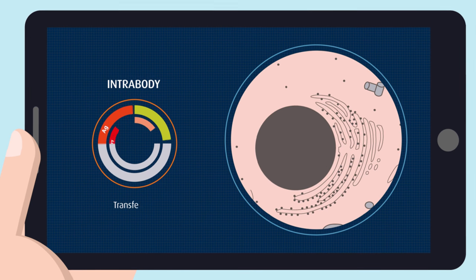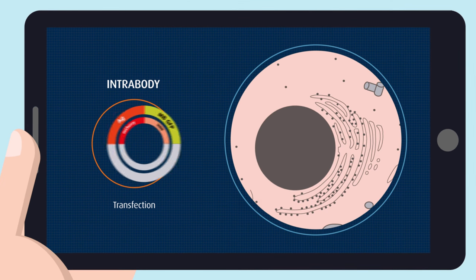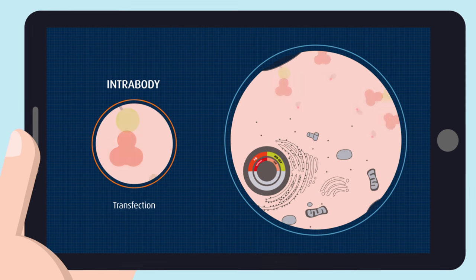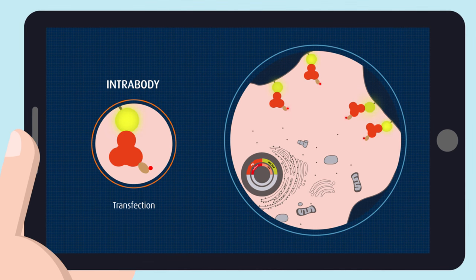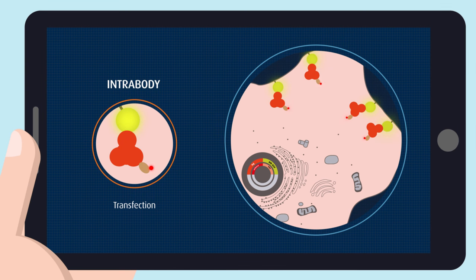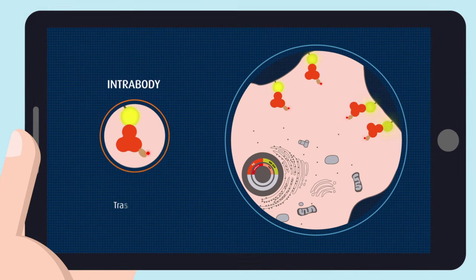We can also test if your VHH work as intracellular antibodies. This time, both your antigen and a selected VHH are expressed as fusions with fluorescent proteins. We directly detect co-localization in living cells.